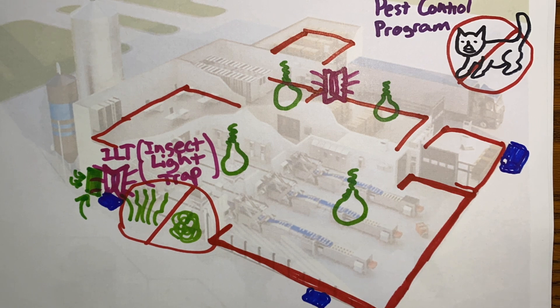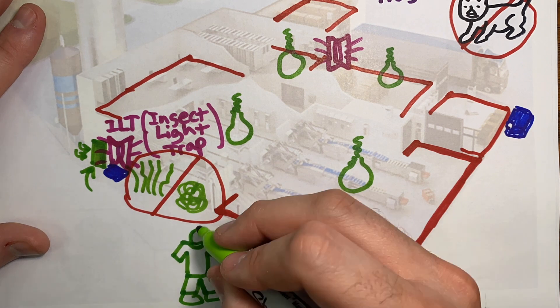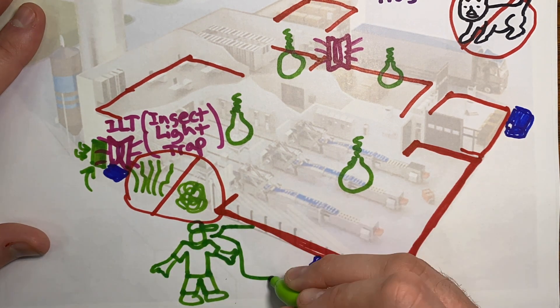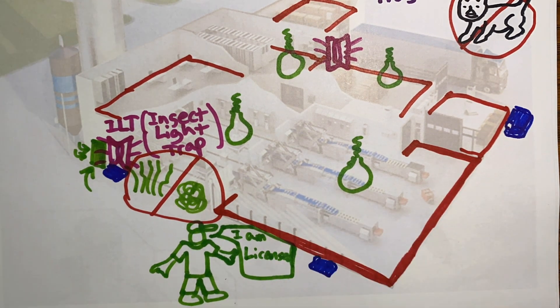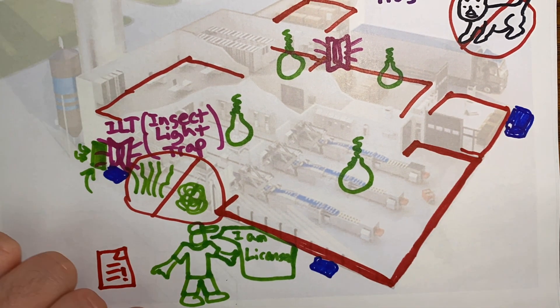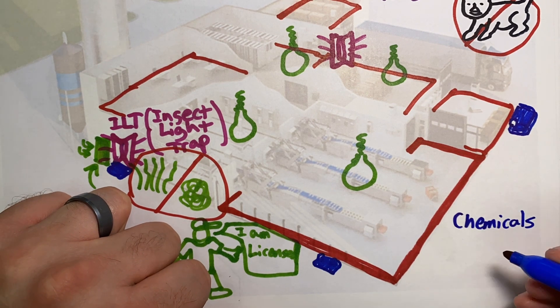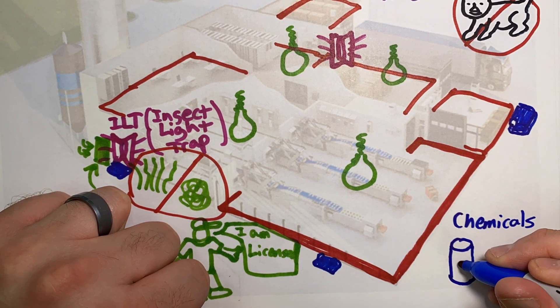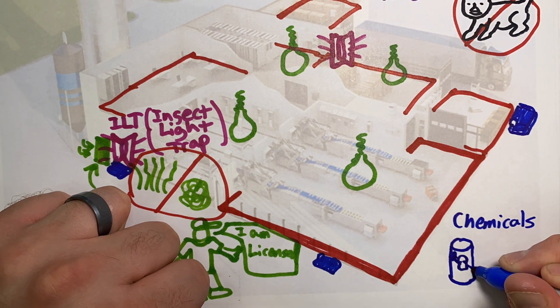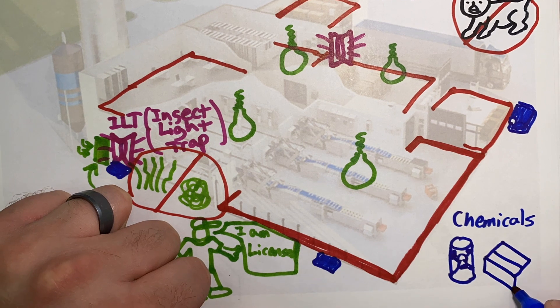Do you have a pest control provider? Are they trained? Are they licensed? Are they documenting findings and corrective actions? For chemicals, if you're using bait stations or some other type of mitigation, are these chemicals approved? Do you have SDSs? These are all considerations for a good pest control program.